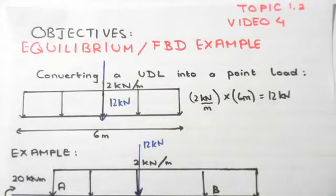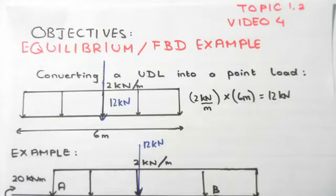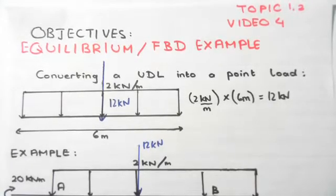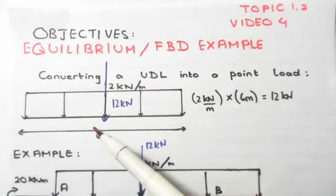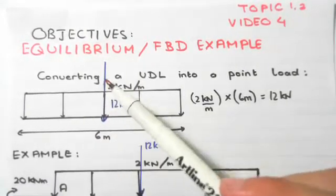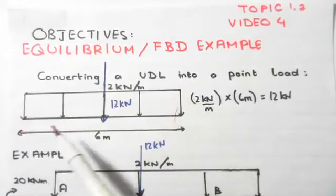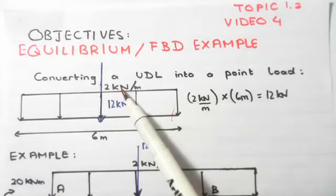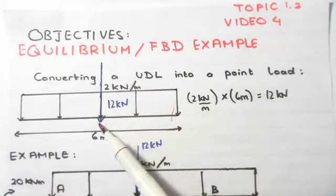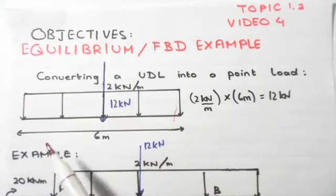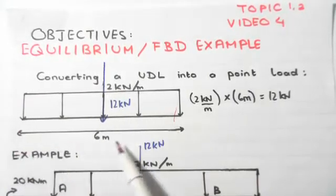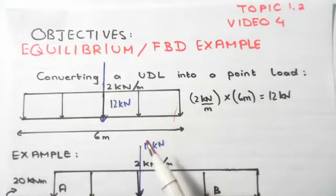The following video is another example of equilibrium and free body diagram problems. The main point is to explain how we convert a uniformly distributed load into a point load. Initially ignoring the blue line in the middle, we have a uniformly distributed load of two kilonewtons per meter. We ignore the 12 kilonewton point load for now. The span of this uniformly distributed load is six meters long.